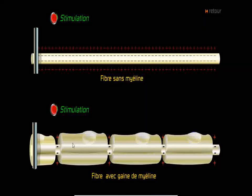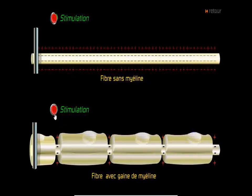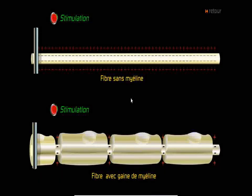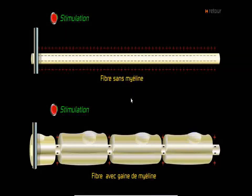For the fiber having myelin sheath, let's see. Okay, what can you conclude from this animation? We can conclude that myelin sheath accelerates the nerve message.